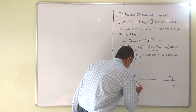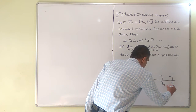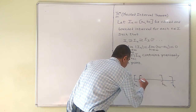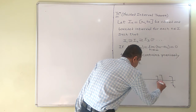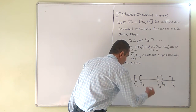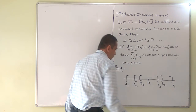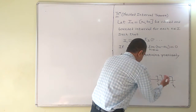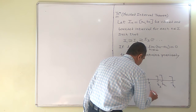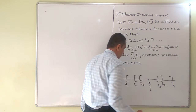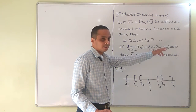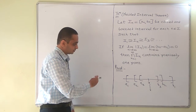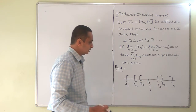I_2 is [a_2, b_2] and it is contained in I_1. So the intervals are nested into one another, and if we take the intersection of all these intervals, geometrically it is clear that it will contain a single point, provided that the limit of (b_n − a_n) tends to zero — that is, the lengths of the intervals go on diminishing.